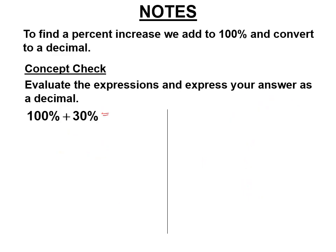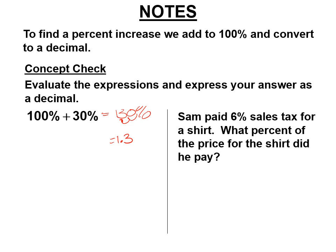That's one method in red. But also realize if they're going to sell it for 40% more, that means they're going to sell it for 140% of the original price. So you just multiply by 1.4 and you get the same $28 using the two methods. Sam paid 6% sales tax for a shirt. What percent of the price for the shirt did he pay? He paid 100% plus an extra 6% in tax. So he paid 106%.